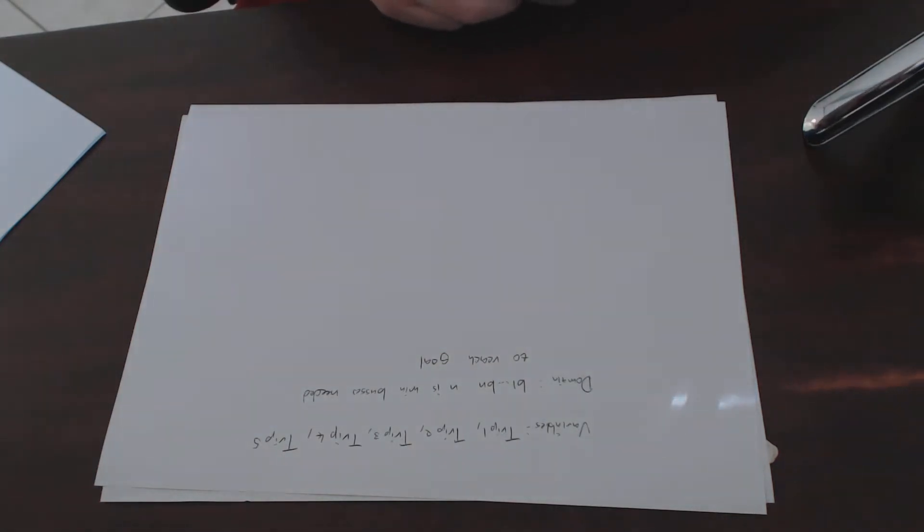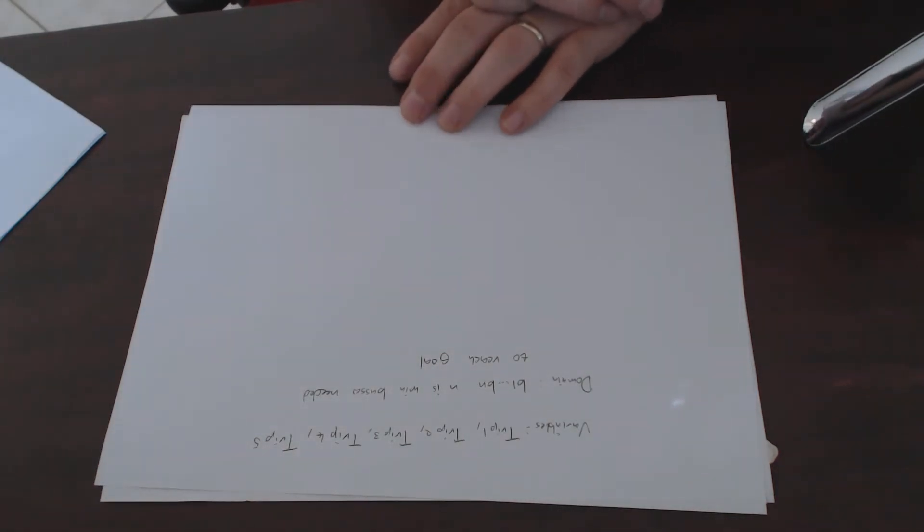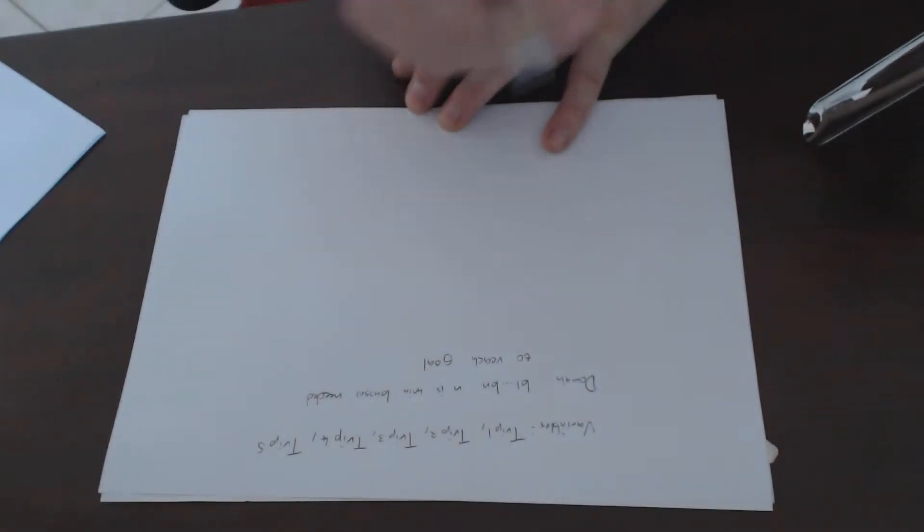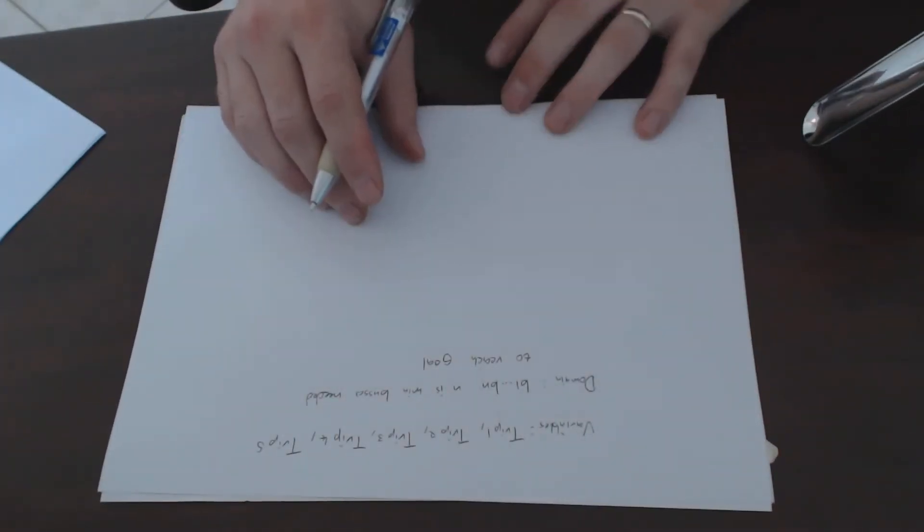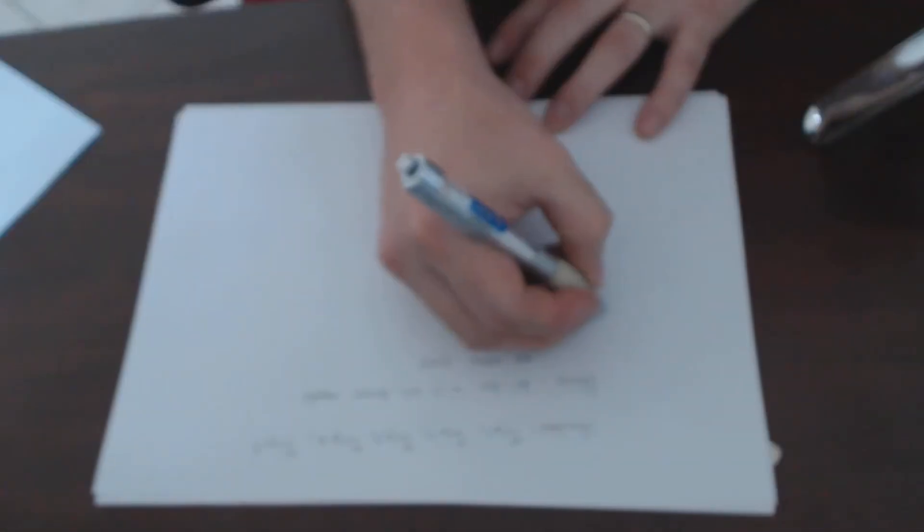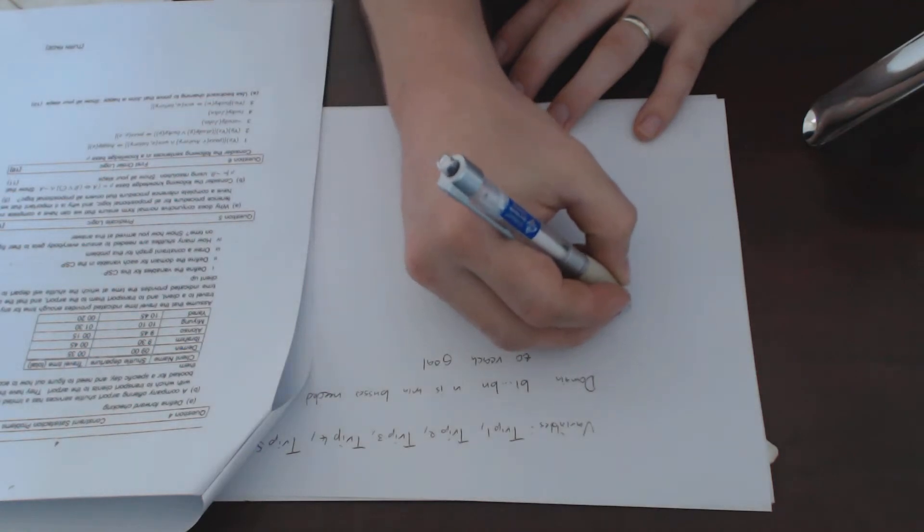Next it says draw a constraint graph for the problem. So to draw a constraint graph I'm going to make life a little easier and just put the details of the trip to identify the constraints.